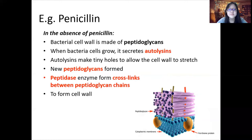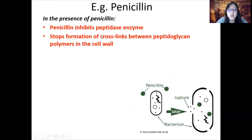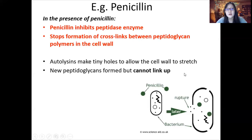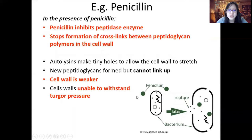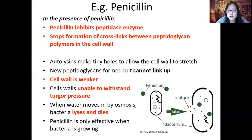In the presence of penicillin, penicillin inhibits the peptidase enzyme, so it inhibits the formation of crosslinks between peptidoglycan polymers in the cell wall. The cell can still make tiny holes via autolysins to allow the cell wall to stretch, and new peptidoglycans can be formed, but they can't be linked up or reinforced. Therefore, it results in a very weak cell wall. When water diffuses into the bacteria by osmosis, the cell walls are unable to withstand turgor pressure, and the bacterial cells can lyse and die.